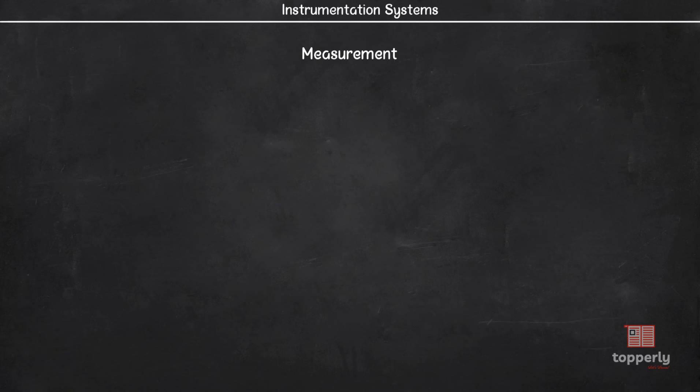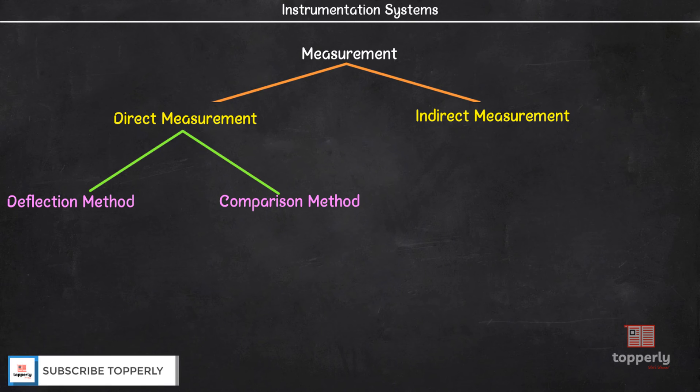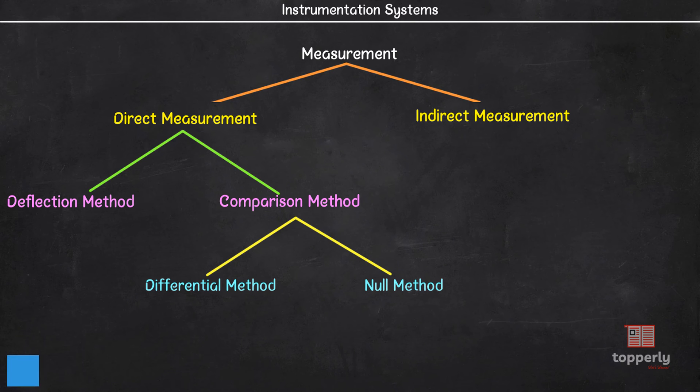We will see that the act of measurement is broadly classified into two types: direct and indirect measurement. Of this, the direct measurement is again classified into deflection method and comparison method. Again, the comparison method can be classified into differential method and null method. That's enough introduction, let's start our lecture.